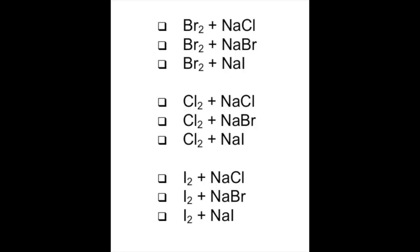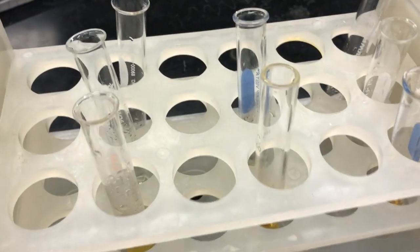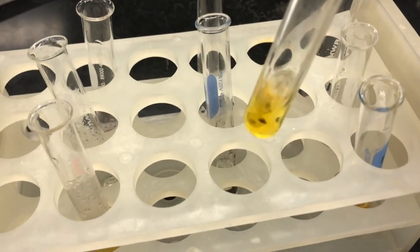Moving on to Group 7A, we will be adding anions from this group to the elements from this group to check for oxidation of the anions. We will be combining them with the diatomic elements and the anions in pairs. We will arrange all of our diatomic elements with hexane in the test tube rack. These test tubes contain the diatomic element, and to that we will add the anions of each group.